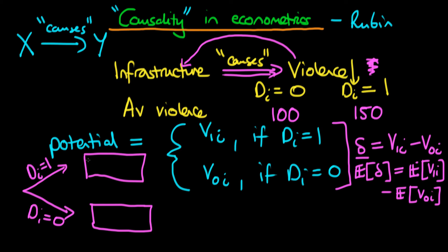For both of these groups, we can ask: what is the level of violence that district would have obtained had they received infrastructure spending, and compare that with the level they would have obtained had they not received it. In the top group, we actually observe V1_i, so V0_i is what we call a counterfactual — we never actually observe it because D_i equals one. In the bottom group, V1_i is the counterfactual, whereas V0_i is the observed.